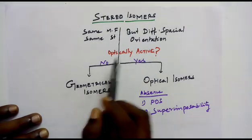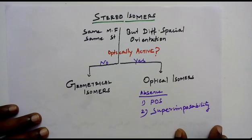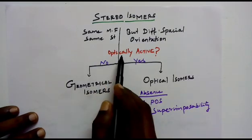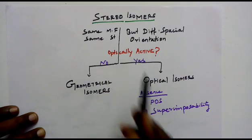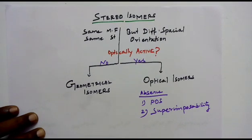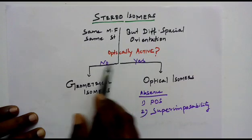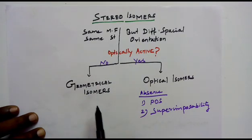So, there is a difference in the three-dimensional orientation, then they are stereoisomers. Now, put a question: whether it is optically active or not. Optically active means whether they are able to rotate the plane polarized light clockwise or anti-clockwise. If yes, they are optical isomers. If no, they are geometrical isomers.